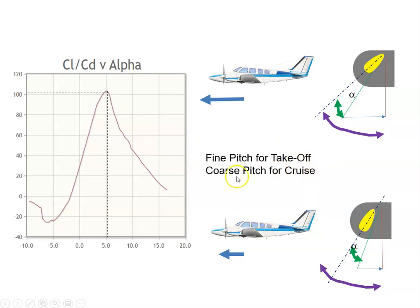So we want fine pitch for takeoff and coarse pitch for cruise. And that is the advantage of a variable pitch propeller. With a variable pitch propeller, you would set the prop pitch fine for takeoff, take off, and climb out. Then when you get established in the cruise, the propeller pitch would be changed to a coarse pitch. So that is the advantage of a variable pitch propeller.